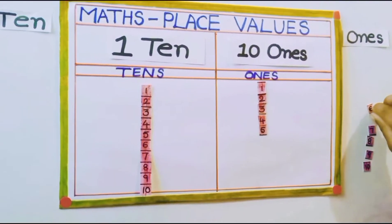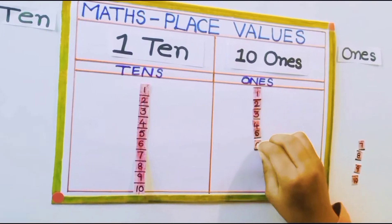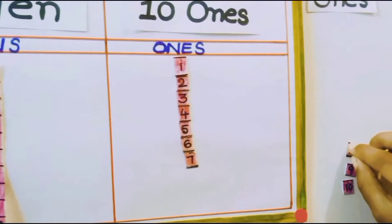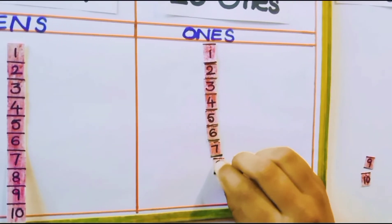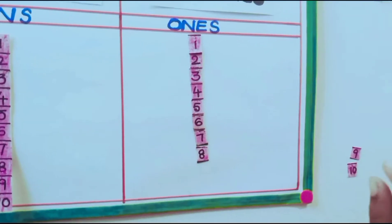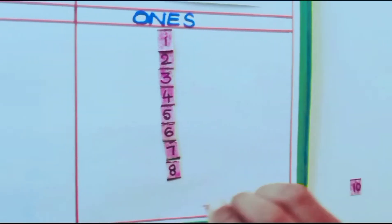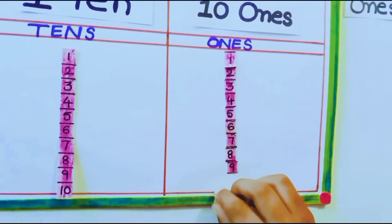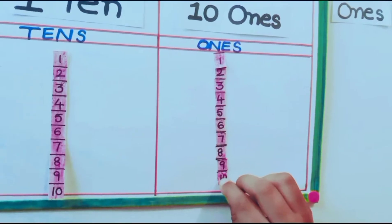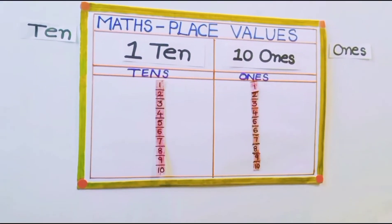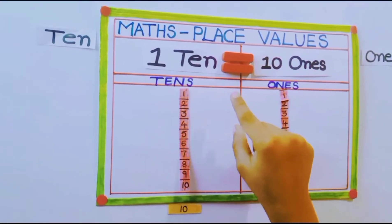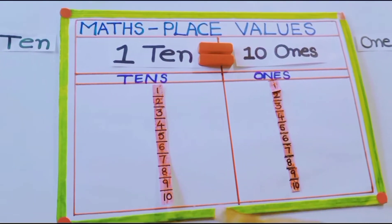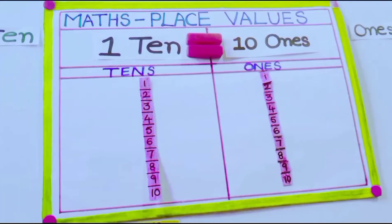6 ones, 7 ones, 8 ones, 9 ones, and 10 ones. 1 ten equals 10 ones. 1 ten equals 10 ones. Very good.